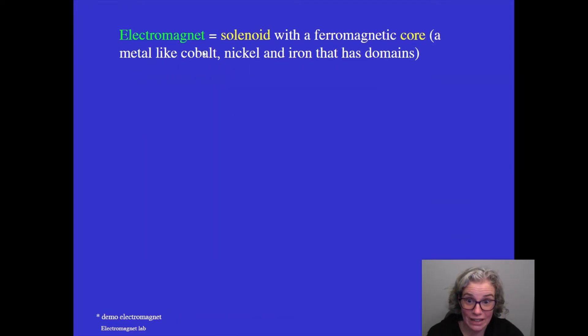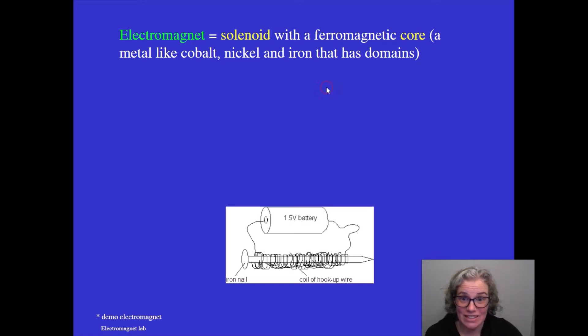An electromagnet is a solenoid, a coil, with a ferromagnetic core. So that means it's made up of metal, like cobalt, nickel, or iron. And it has domains. Here's an example. I've got a battery attached to a wire that's wrapped around an iron nail. When I connect the circuit, this nail is going to become magnetized. And when I disconnect the circuit, the nail is no longer magnetic.